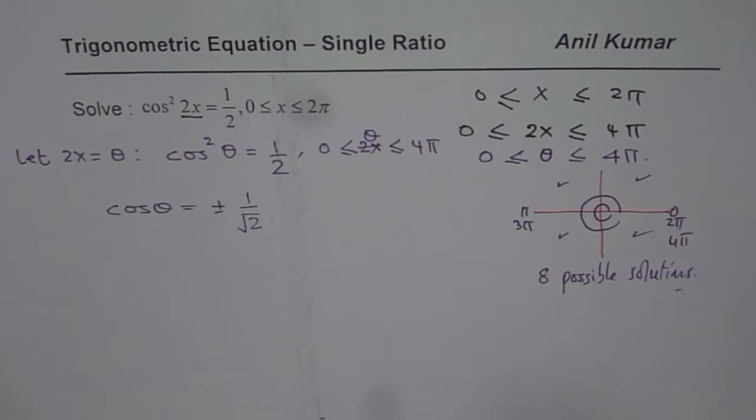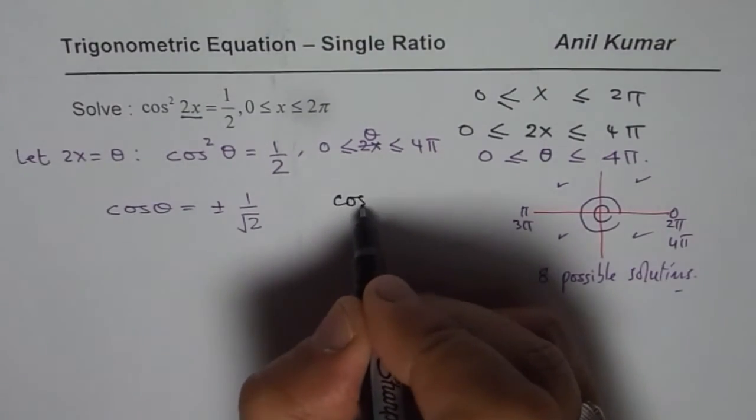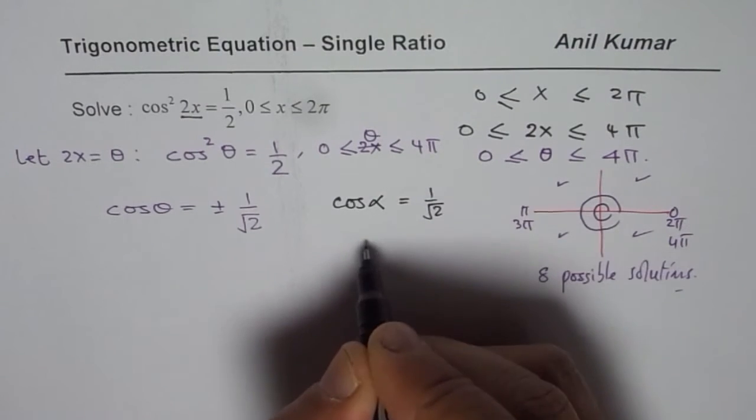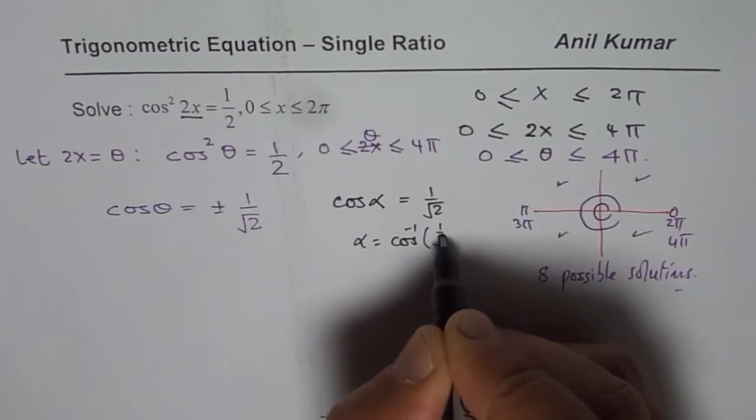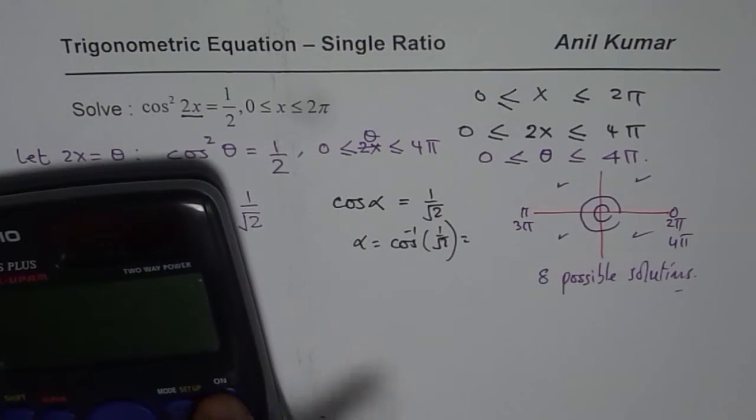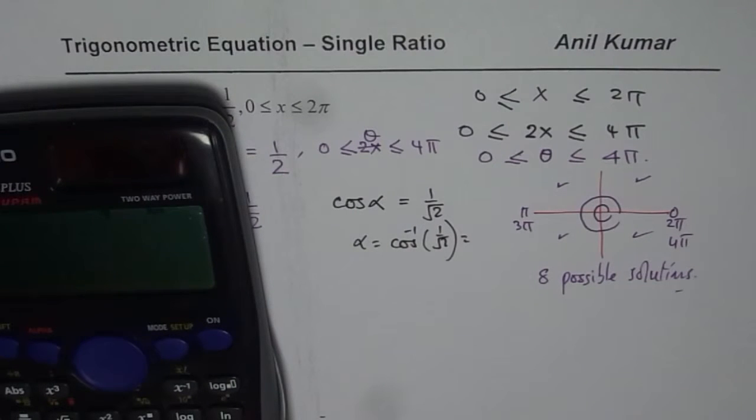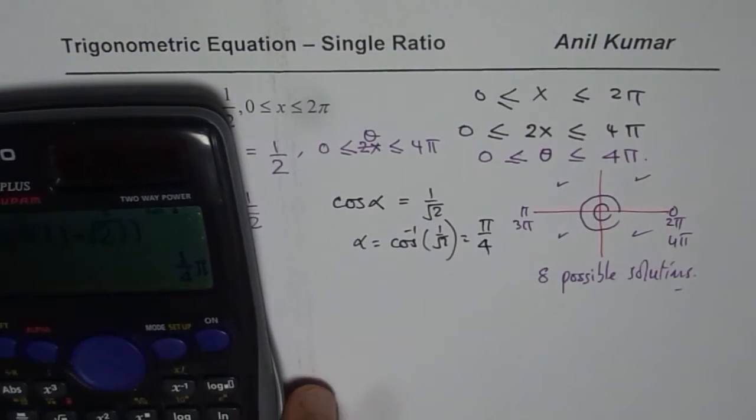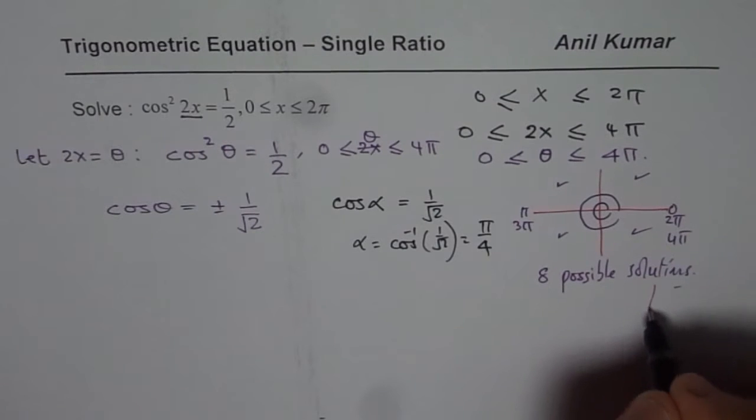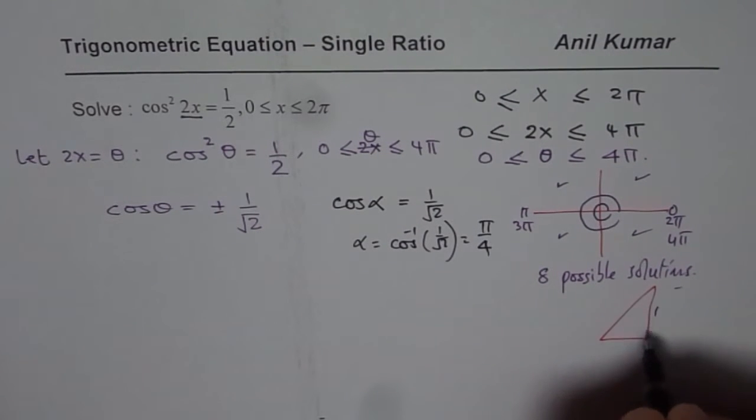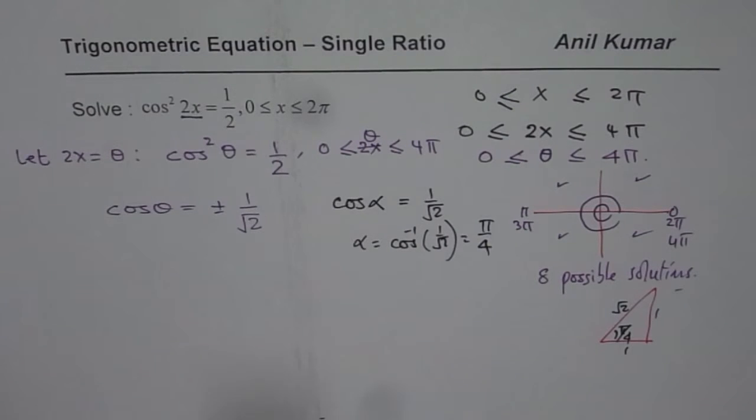Now we will write this as a reference angle which is cos α = 1/√2 and α = cos⁻¹(1/√2). You can use your calculator or special triangle to get the answer. So we get π/4. Since you know π/4 special triangle, it gives you 1/√2. The sides are 1, 1, √2 for π/4. So you get one acute angle π/4 as your answer.